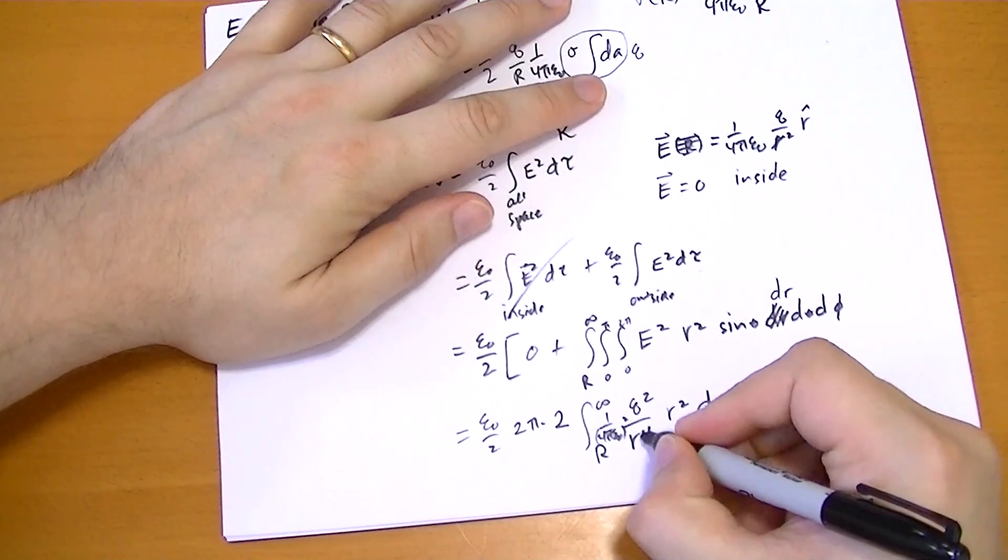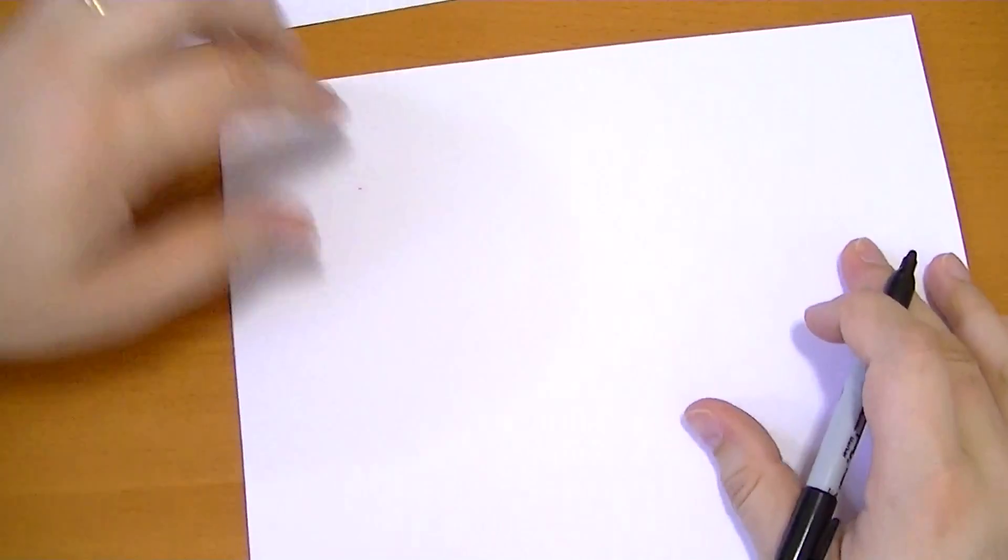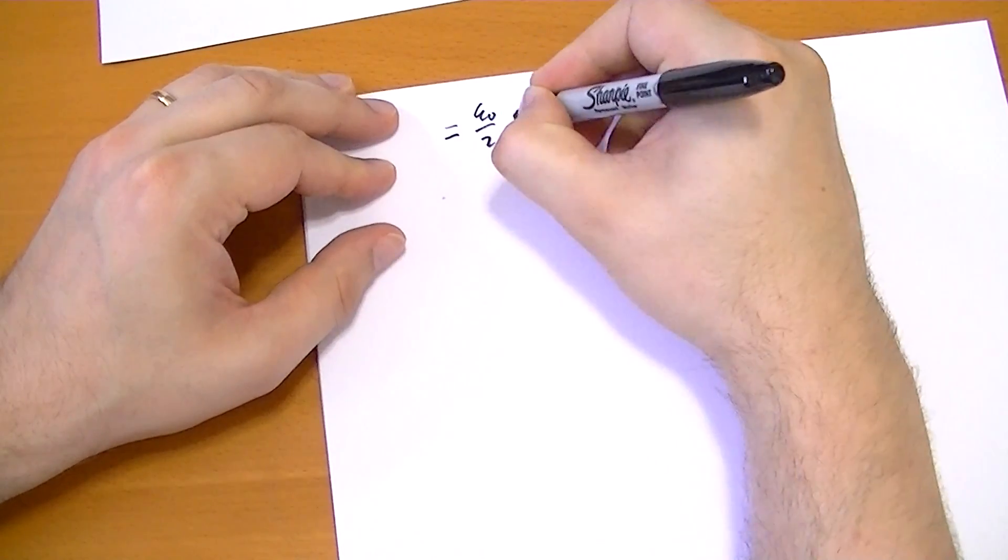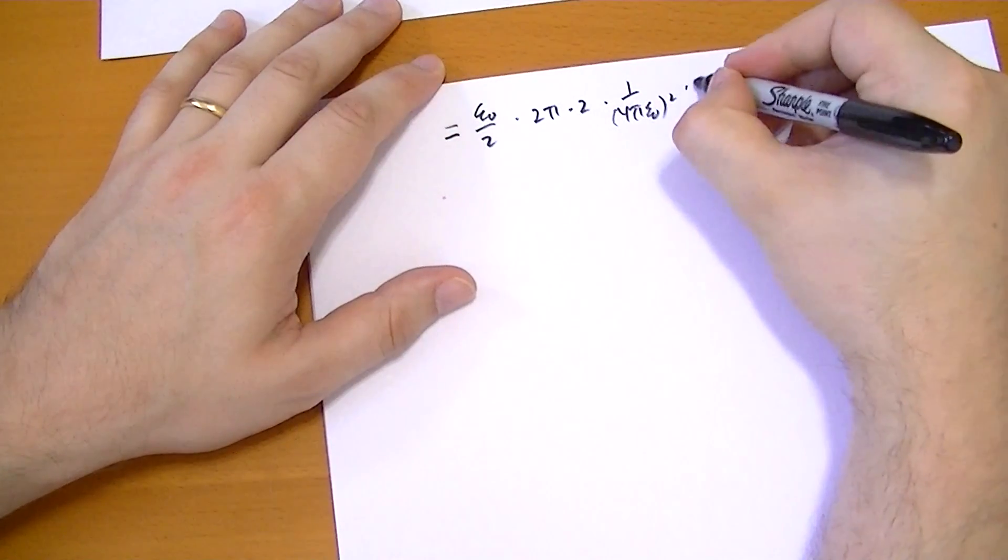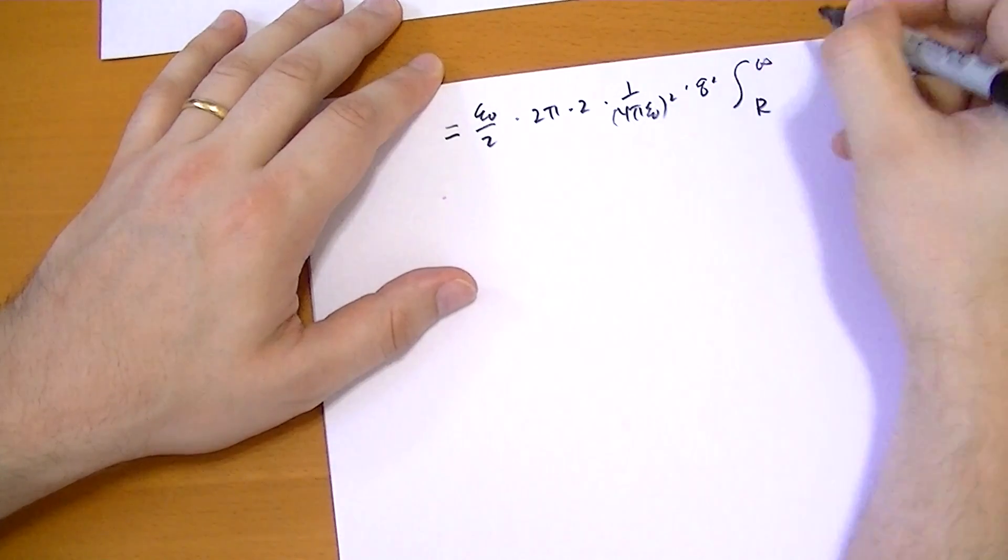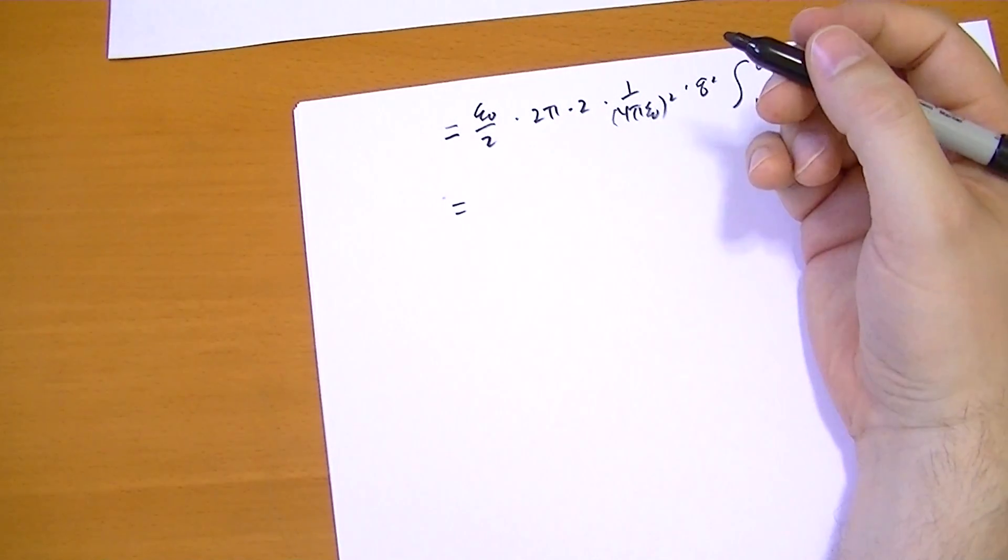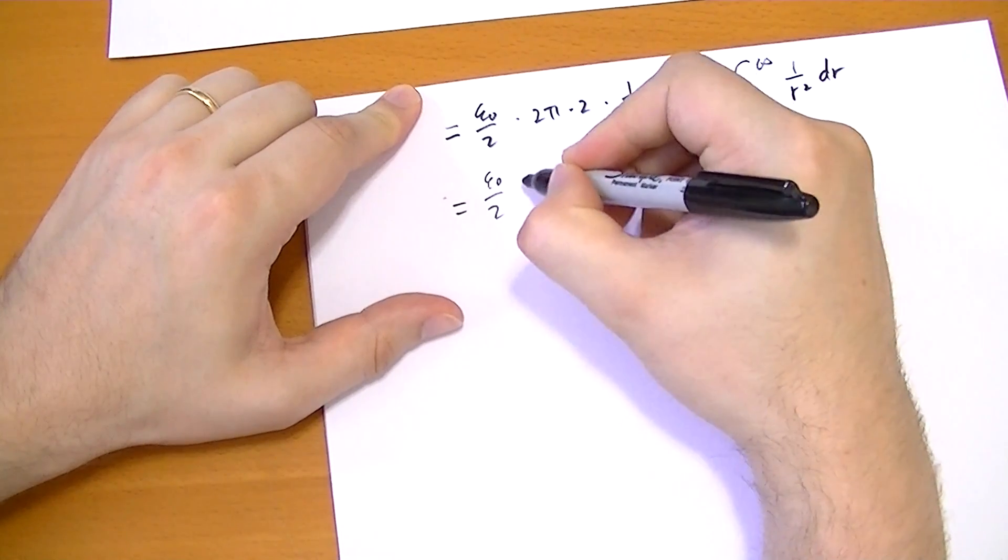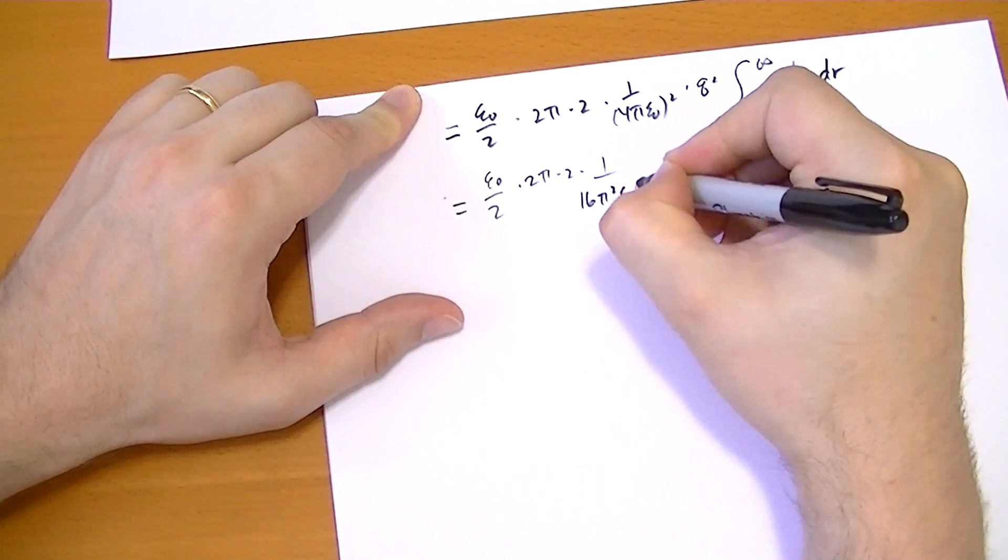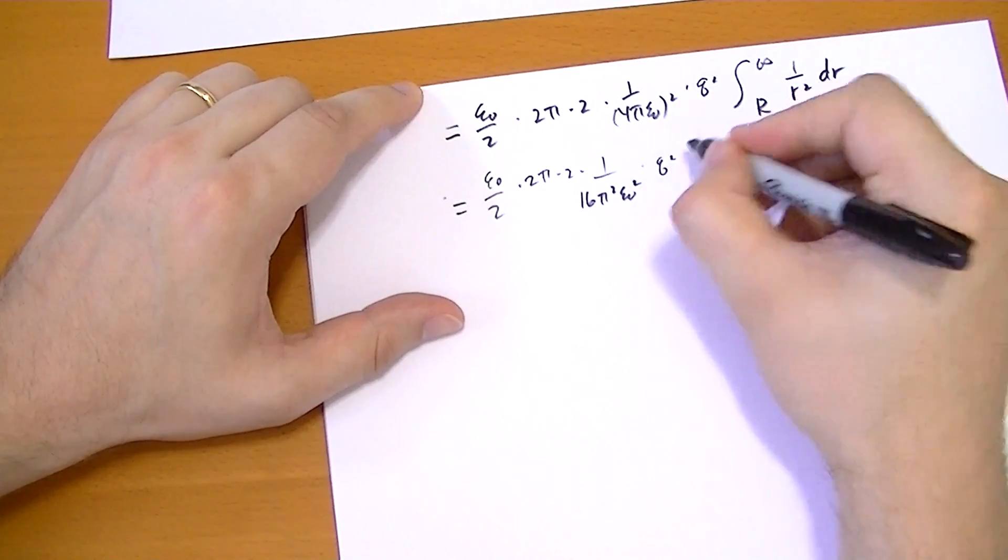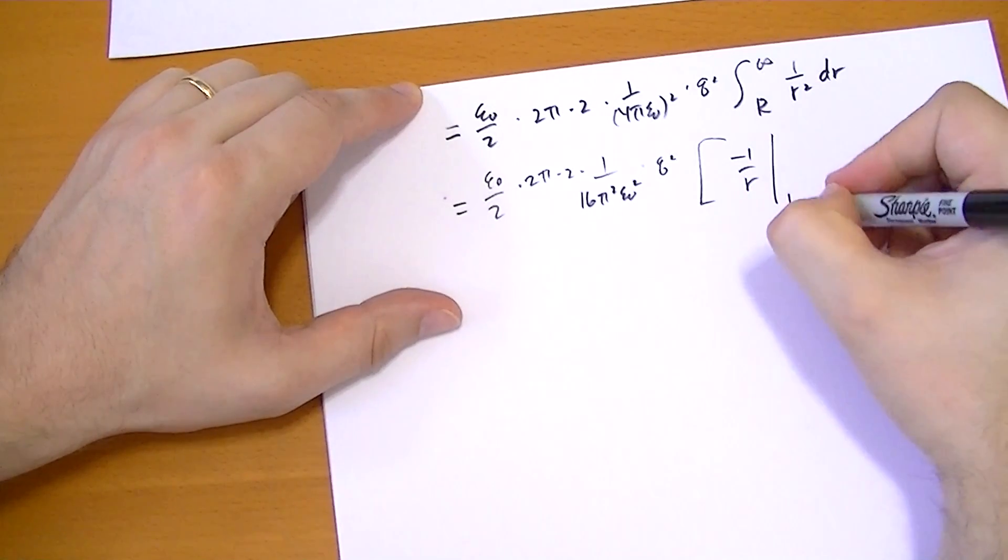Almost done. So we have a case where these two cancel, so we have an R squared on the bottom. The Q squared comes out. So we get that's equal to epsilon naught over 2 times 2 pi times 2 times 1 over 4 pi epsilon naught squared times Q squared integral from R to infinity of 1 over R squared dr.